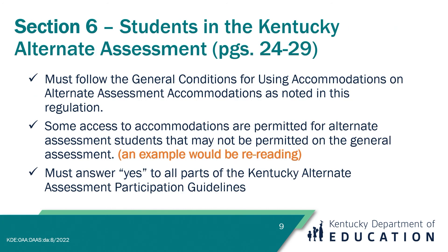Section 6 of the Inclusion of Special Populations Regulation focuses on students who participate in the Kentucky Alternate Assessment. This information can be found on pages 24 through 29 of the regulation document. Students who qualify for the Kentucky Alternate Assessment are not able to access the general curriculum in the same manner as their peers, even with access to the majority of all available accommodations. This does not mean alternate assessment students have different or no accommodations — it means the way content or curriculum is provided to them may differ from students completing the general assessment.